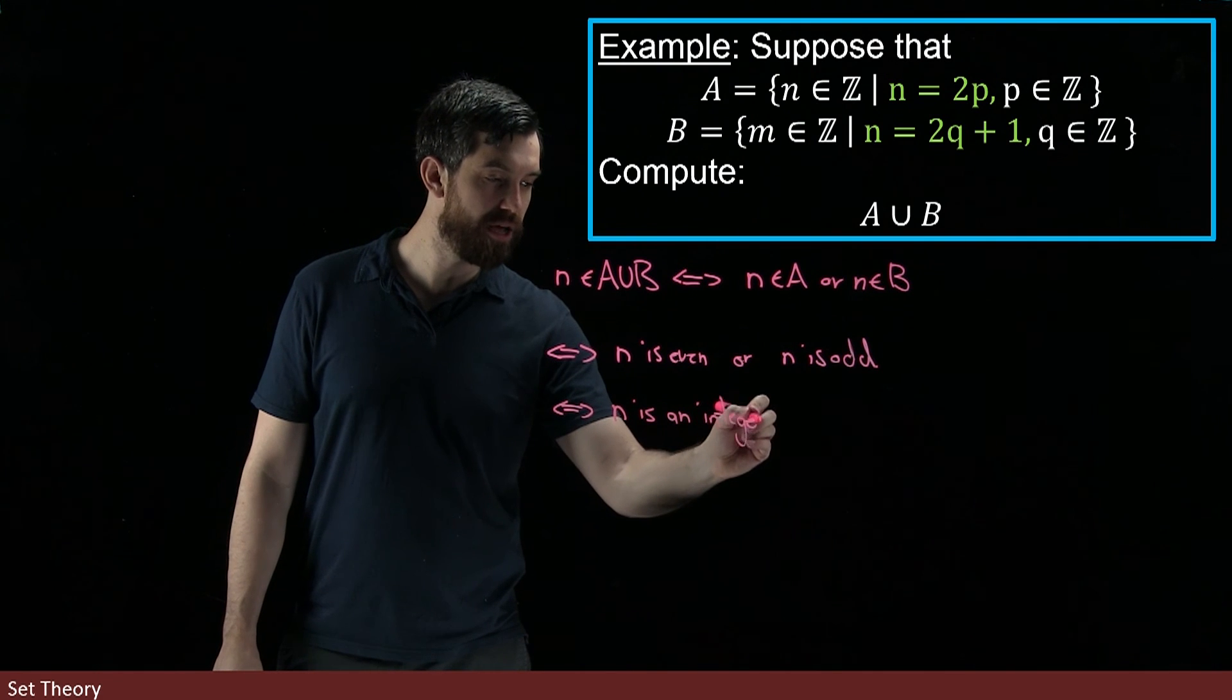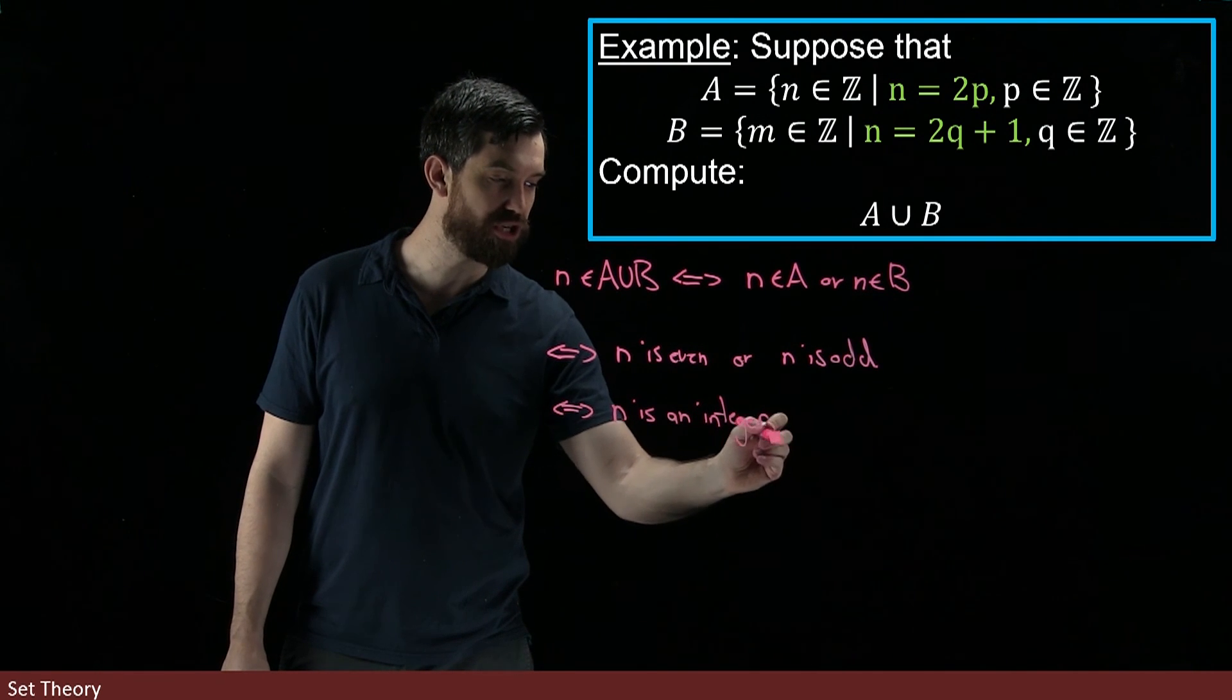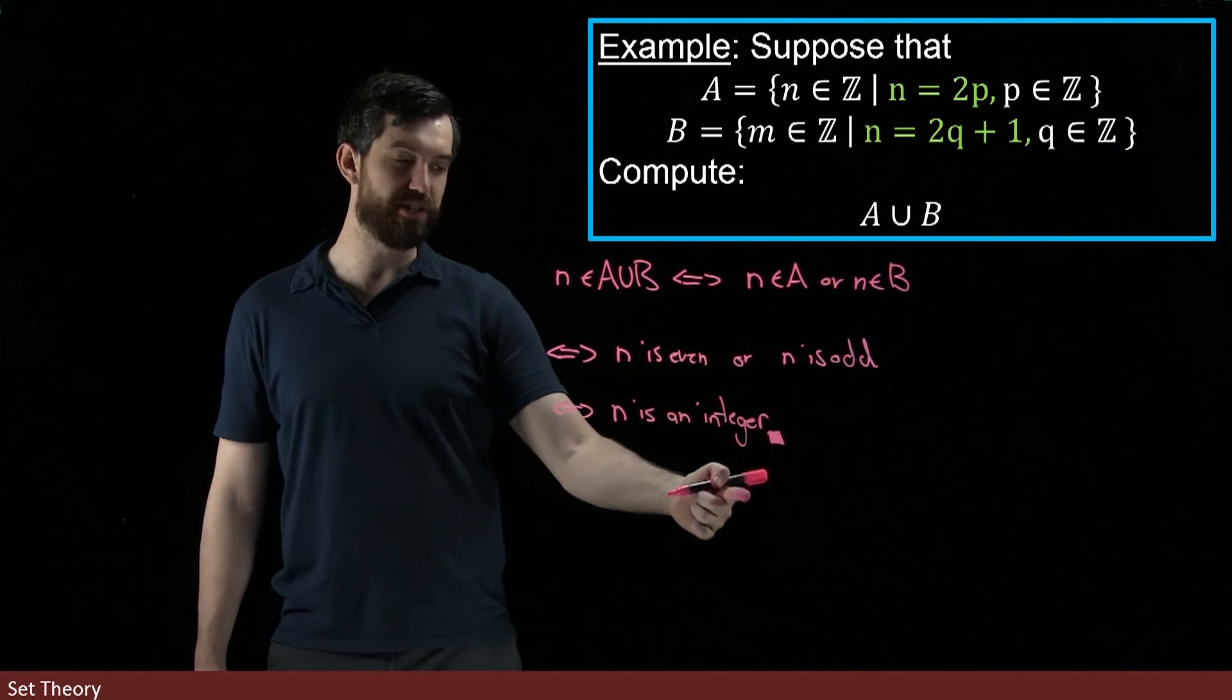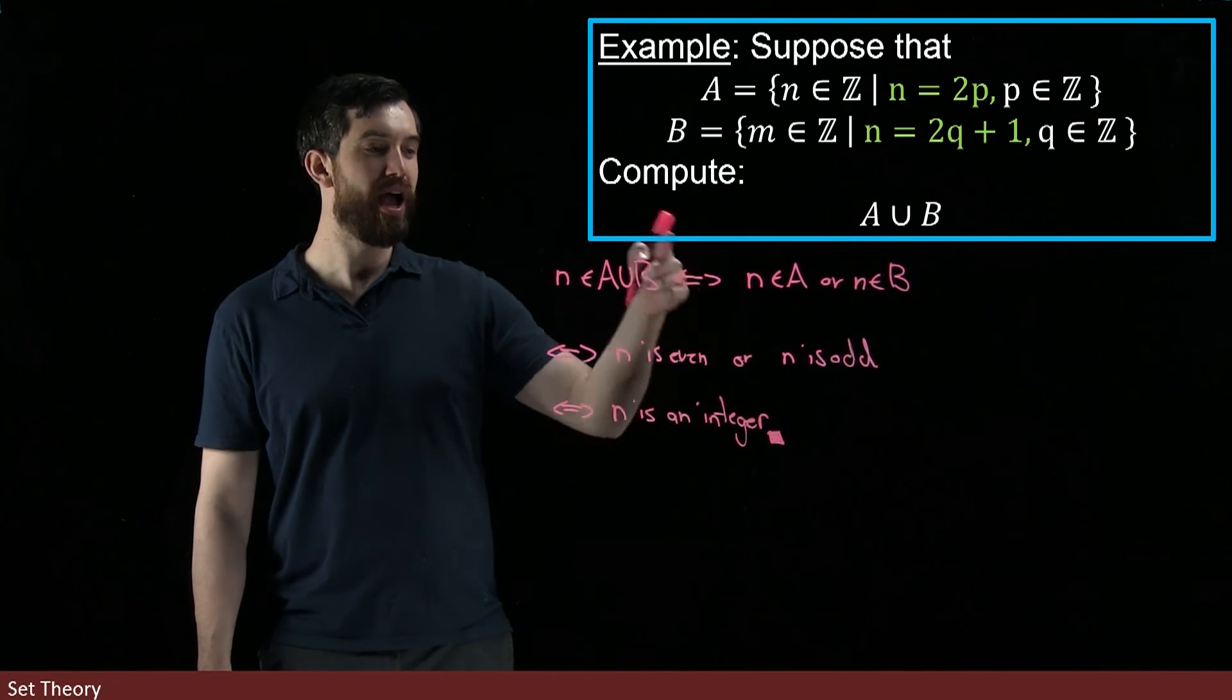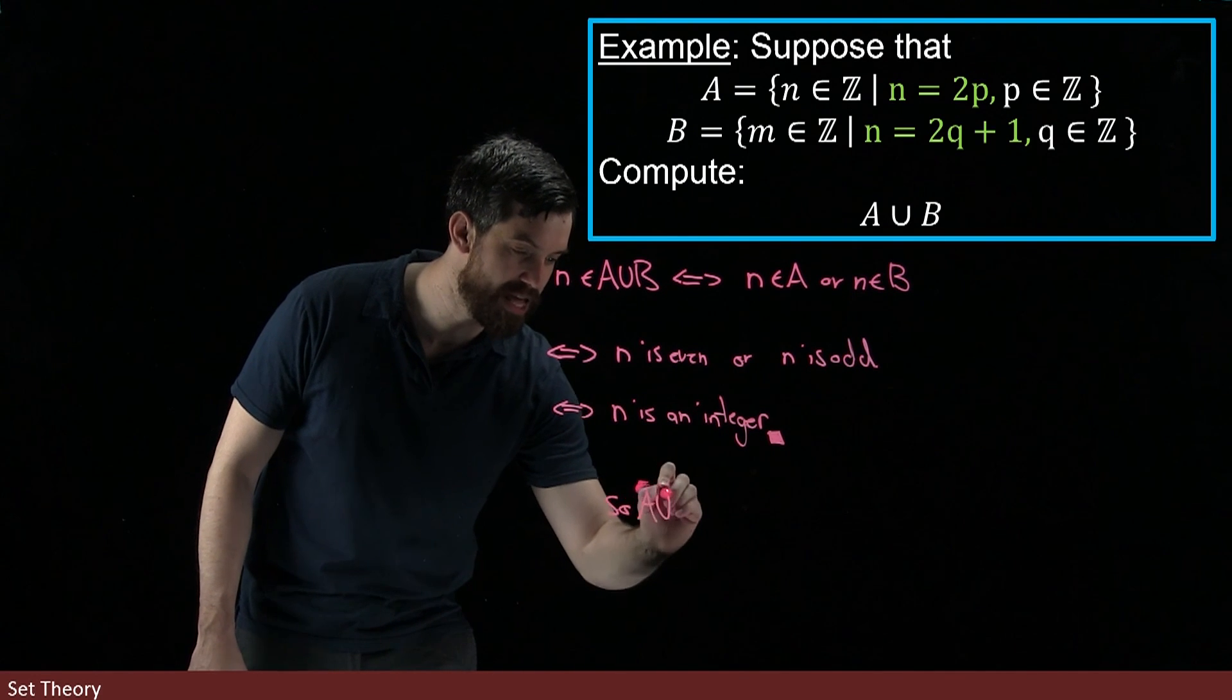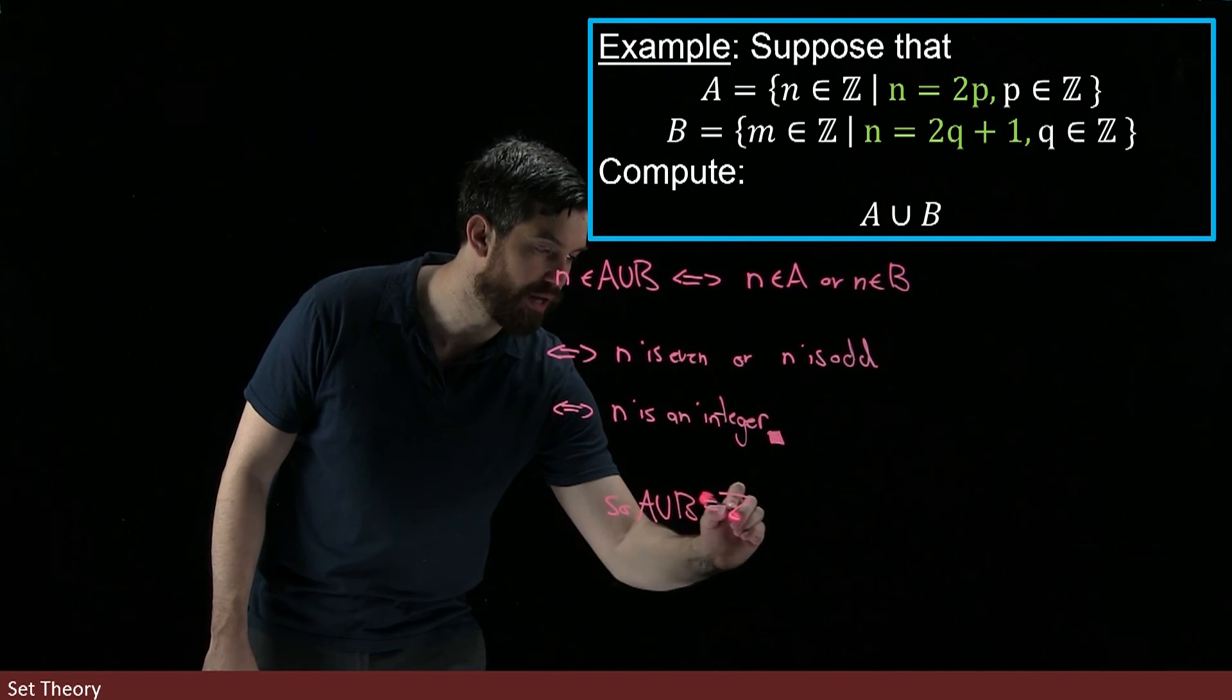And then because I have biconditionals both ways, if I start in the union I end up being an integer. If I start being an integer I end up being in the union. And so I can conclude that A ∪ B is equal to the integers.